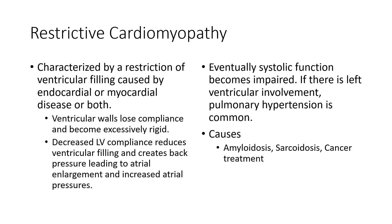Then there is restrictive cardiomyopathy, which is a little bit different because you don't necessarily have changes in the size of the mass. It can be restriction due to the endocardium, the myocardium, or both. You basically end up having a rigid heart — the ventricle walls become excessively rigid and lose compliance, similar issues to what we see in hypertrophic. When we have these rigid or stiff ventricles with such low compliance, we have an inability to fill, resulting in elevated filling pressures, which can cause backflow into the atria and upstream into the pulmonary vasculature, causing other issues there too. Common causes include amyloidosis, sarcoidosis, and certain cancer treatments.